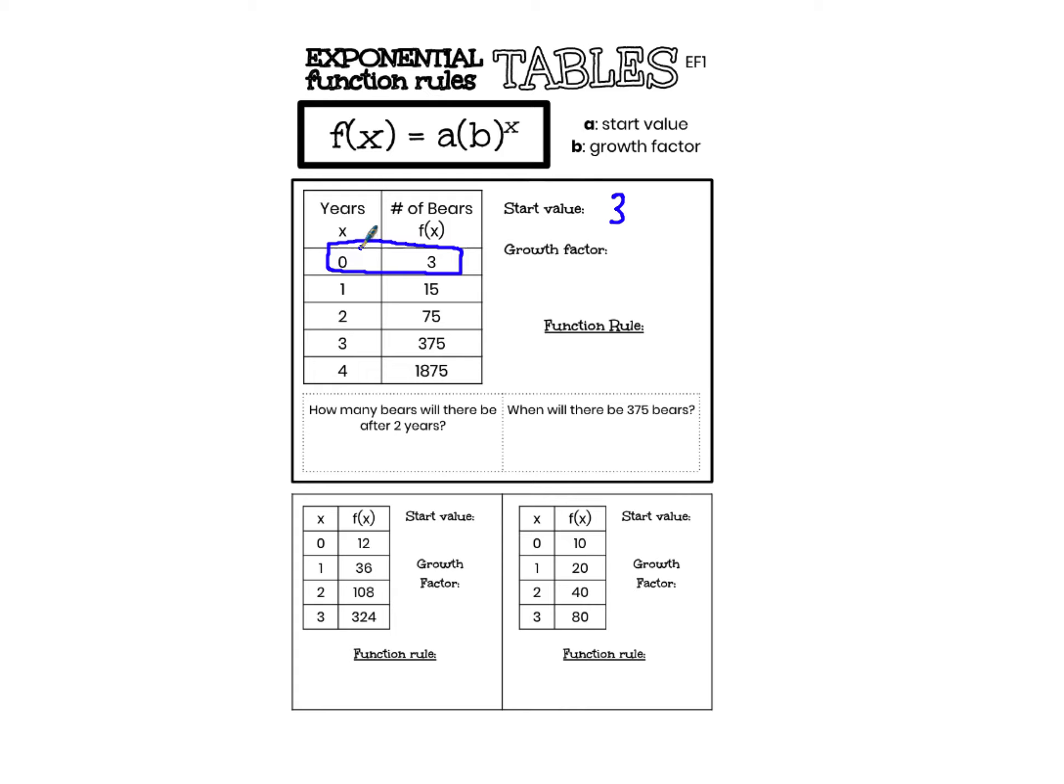Next I need to find the growth factor. The growth factor is what I am multiplying f(x) by to get the next value. So what am I multiplying three by to get 15? What am I multiplying 15 by to get 75? And so on. Now it's great if you can just look at the table and identify that growth factor. What am I multiplying three by to get 15? I can just look at it and say hey the growth factor is five. Three times five is 15. Fifteen times five is 75. And then I know because I made the table that 75 times 5 is 375, and 375 times 5 is 1875.